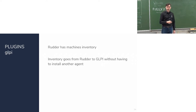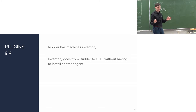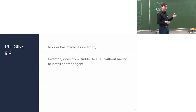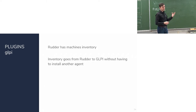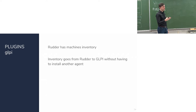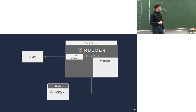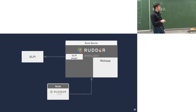GLPI is an inventory tool where you can track everything in your platform. Since Rudder uses the same underlying tool to build its own inventory, you can use the Rudder agent to send inventory directly to GLPI instead of installing a separate GLPI agent. The goal is to simplify integration with GLPI. If you use GLPI to install packages — something Rudder can also do — you still need to install the GLPI agent for that. The agent talks directly to the Rudder server, which then sends the inventory to GLPI.